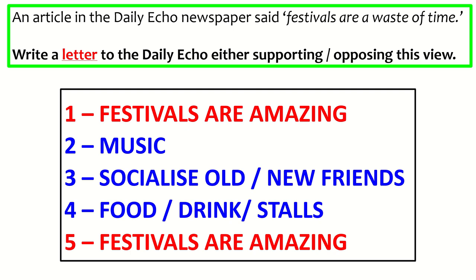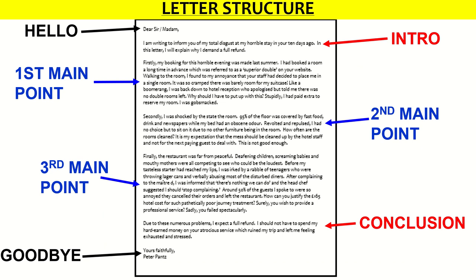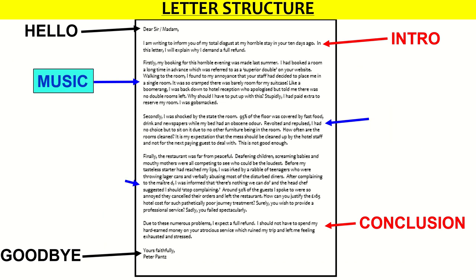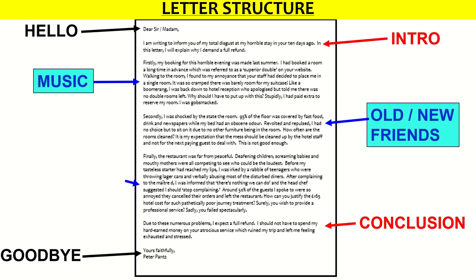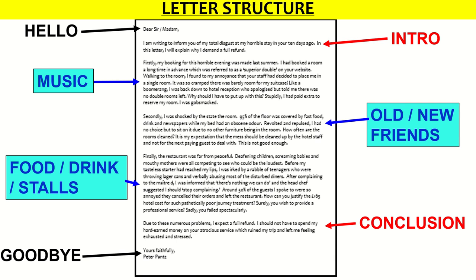The three points I'm going to pick are music, socializing with old friends and meeting new ones, and the food, drink, and stalls. In my intro I'm going to say I think festivals are amazing, and I'd do the same in my conclusion. Then I'd write five to six sentences about each point. And remember, food, drink, and stalls could all go into one paragraph.